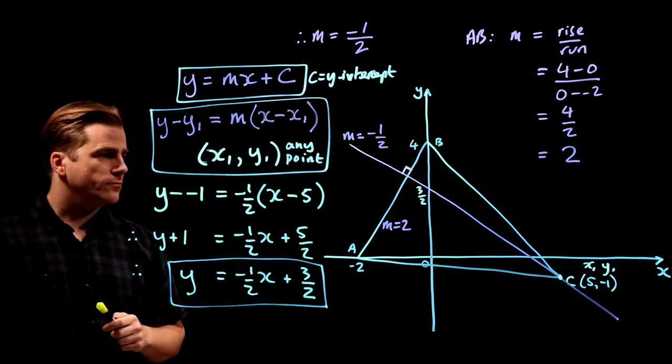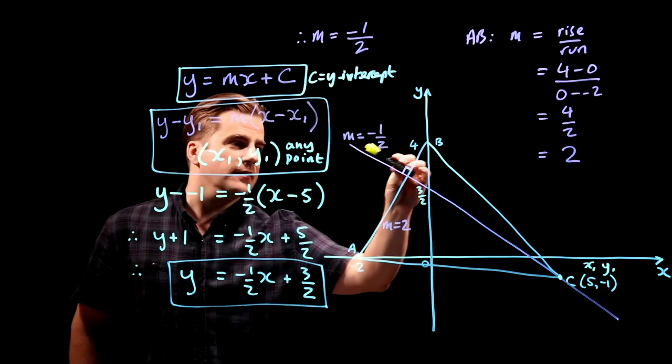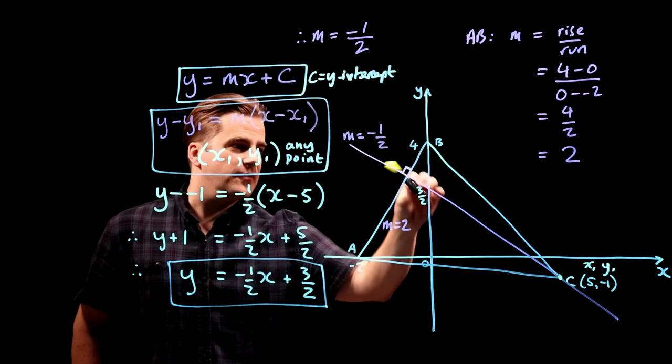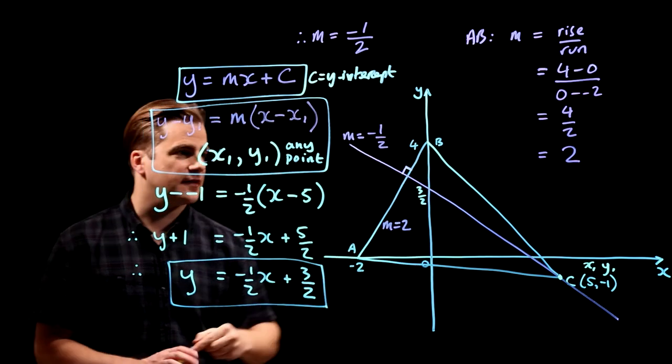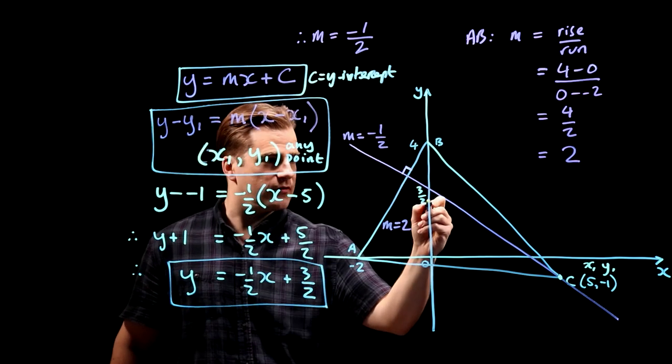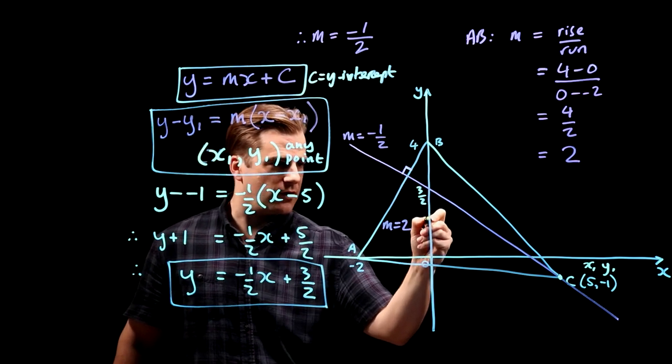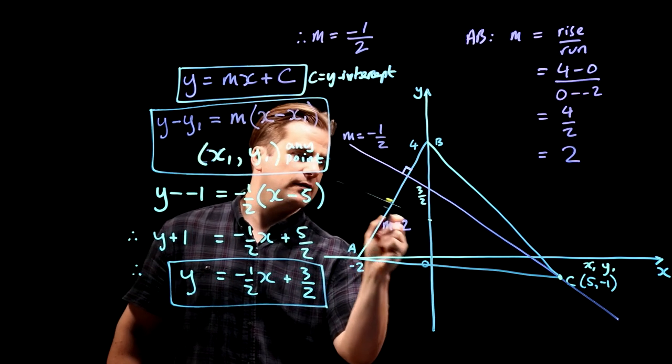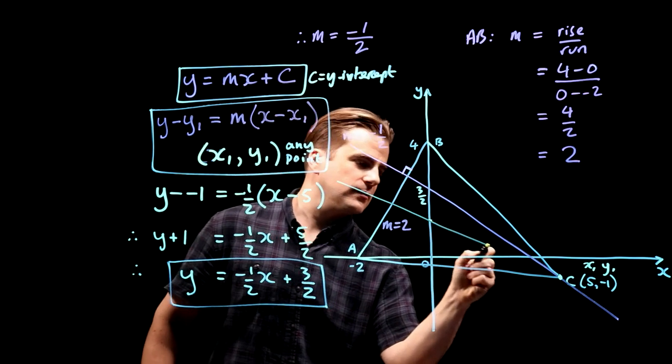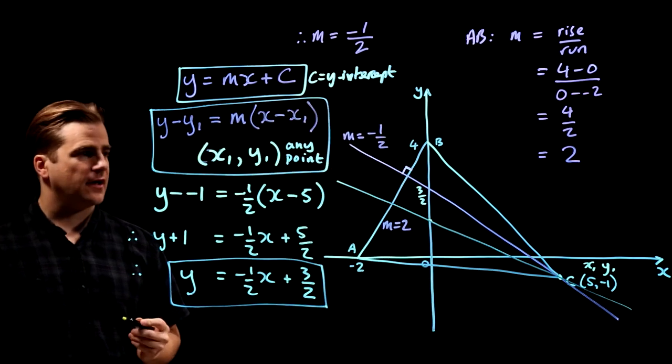So like I said at the beginning, this point here where they cross could be anywhere. And because it's 3 over 2, this is clearly not to scale. If that's 4, 2 is about there, so 3 over 2, which is 1 and a half is about there. In reality, the line is more like that. If you want it to scale.